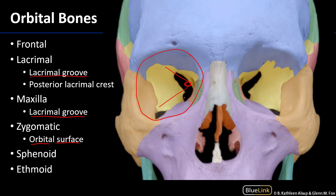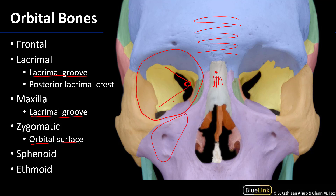The paranasal sinuses are going to be in close communication with the orbit in various ways. Geographically, the frontal sinus within the frontal bone is going to be abutting the orbit. The ethmoidal sinus is going to be abutting both orbits. The sphenoidal sinus further posteriorly will be abutting the orbits, and then the maxillary sinus is also going to be abutting the orbits. So all of those paranasal sinuses, while they communicate with the nasal cavity, are also going to be very close to the orbit.